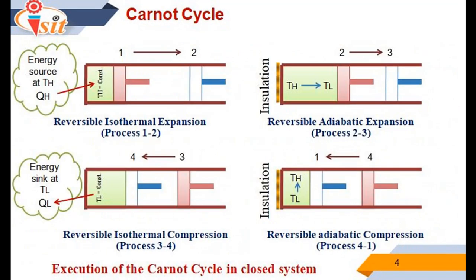Probably the best known reversible cycle is the Carnot cycle, first proposed in 1824 by French engineer Sadi Carnot. The theoretical heat engine that operates on the Carnot cycle is called the Carnot heat engine. The Carnot cycle is composed of four reversible processes — two isothermal and two adiabatic — and it can be executed either in a closed or steady flow system. Consider a closed system that consists of gas contained in an adiabatic piston-cylinder device as shown in the figure. The insulation of the cylinder is such that it may be removed to bring the cylinder into contact with a reservoir to provide heat transfer.